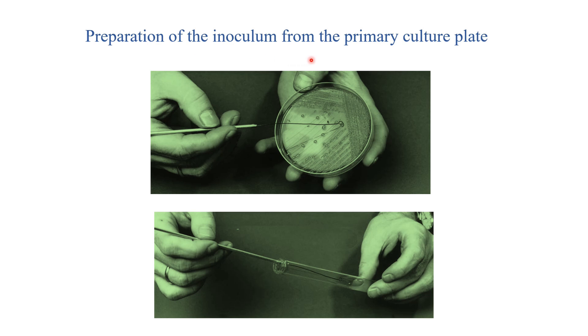Preparation of inoculum from primary culture plate. So, this is the primary culture plate. Here you can see there are so many colonies in the primary culture plate and each colony represents a single type of organism.